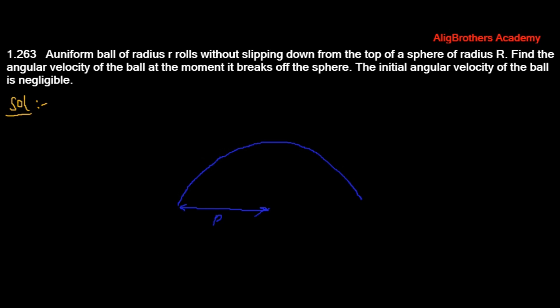Suppose this is a sphere of radius R on which a ball is rolling without slipping, and it starts from the top of the sphere. This is the path of the center of this ball, and this velocity is the velocity of the center of mass of the ball at the instant of breaking off the sphere.